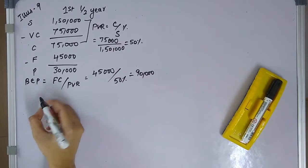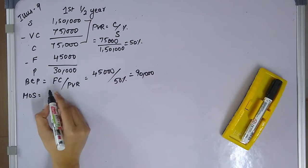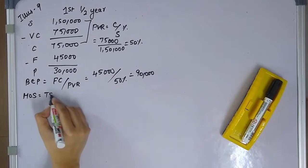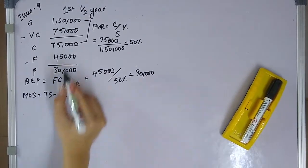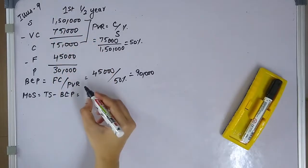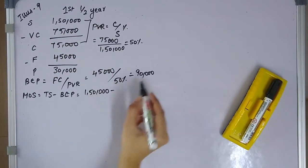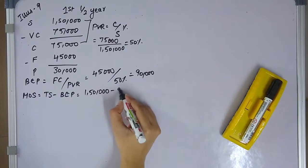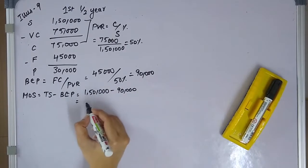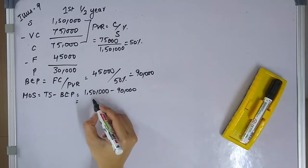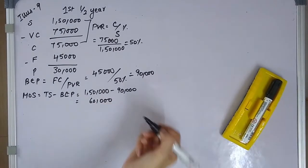Next is the margin of safety. Margin of safety equals total sales minus BEP. Total sales are 150,000 and BEP is 90,000, giving us a margin of safety of 60,000.